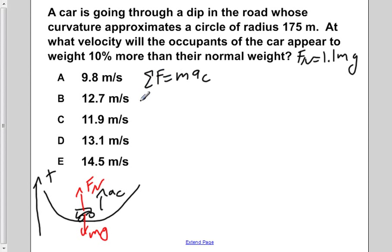If we now do the sum of the forces, we would have Fn minus mg is equal to ma centripetal.